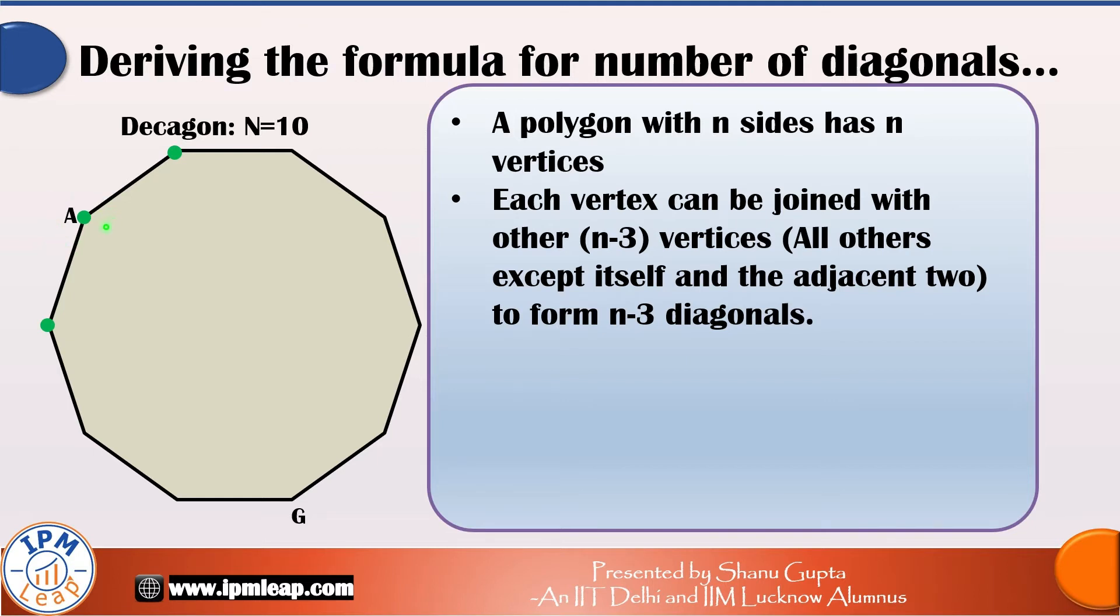So I will be able to join it to all other vertices in this decagon except itself and the adjacent two vertices shown by green dots. Out of 10 vertices, 10-3 that is 7 can be joined with our selected vertex A and that forms 7 diagonals.